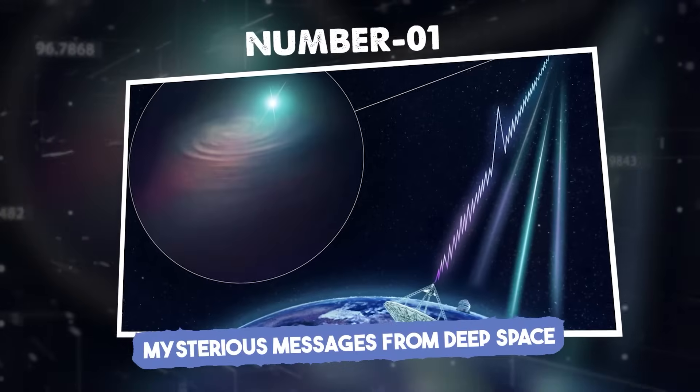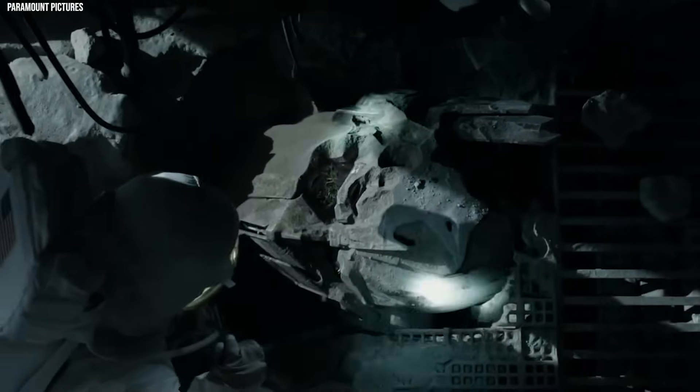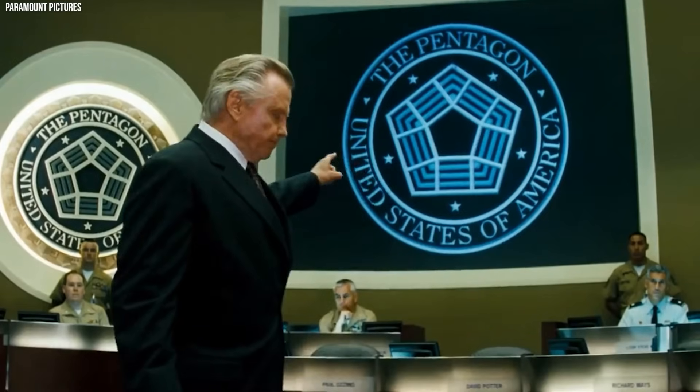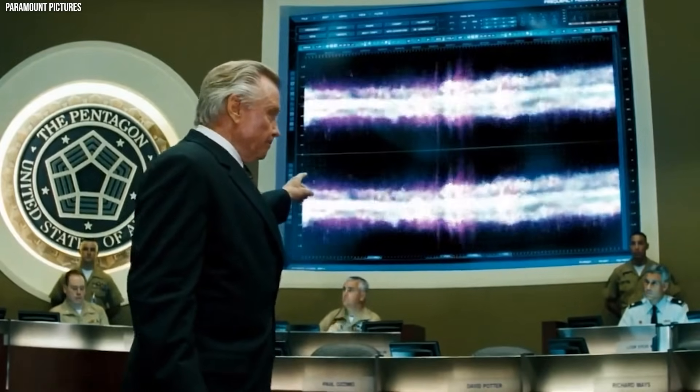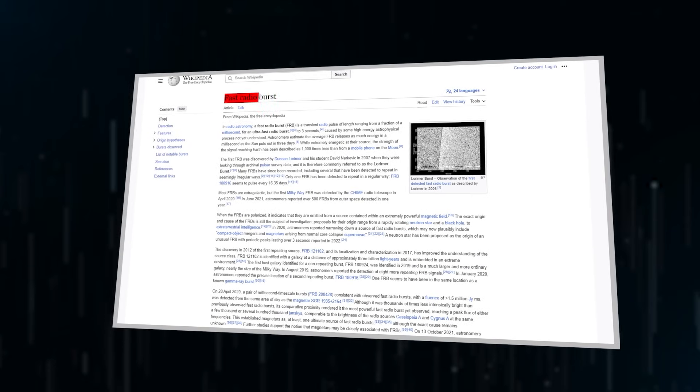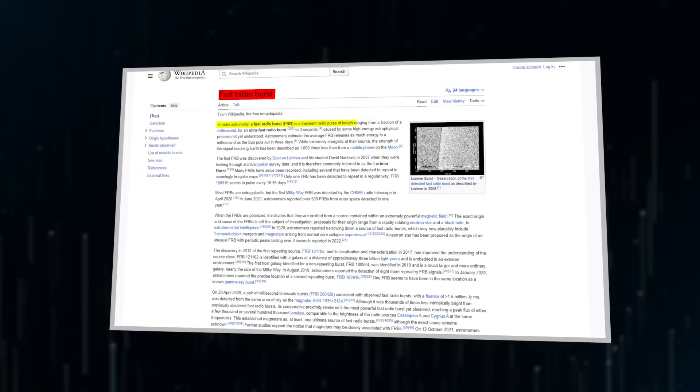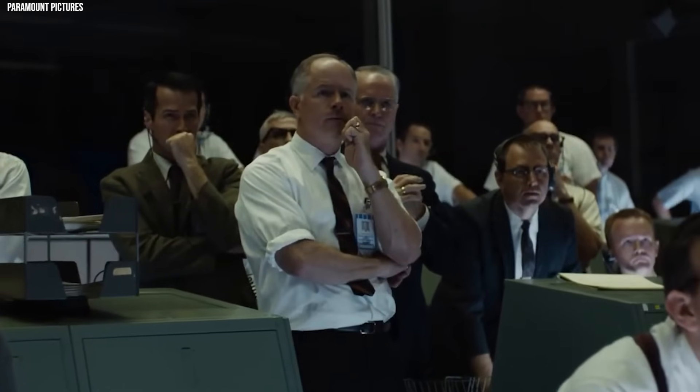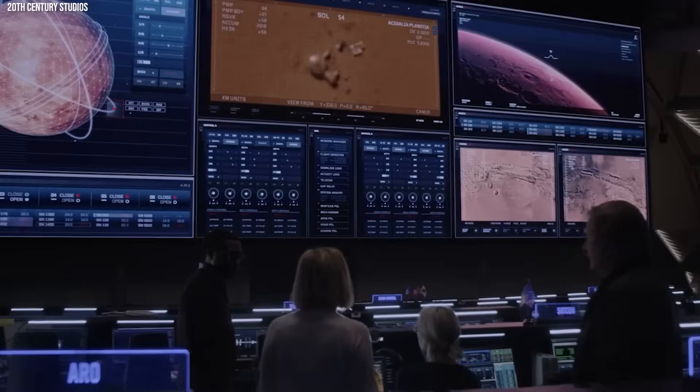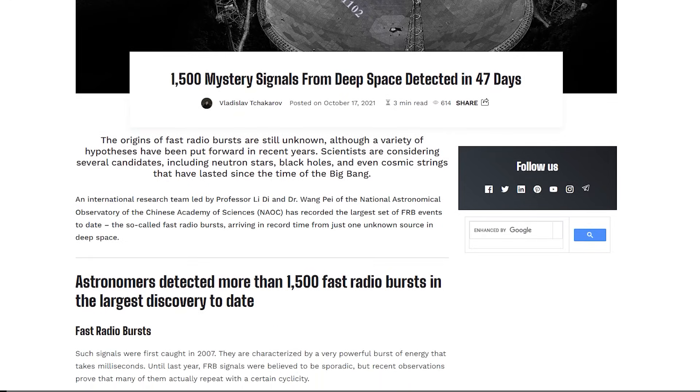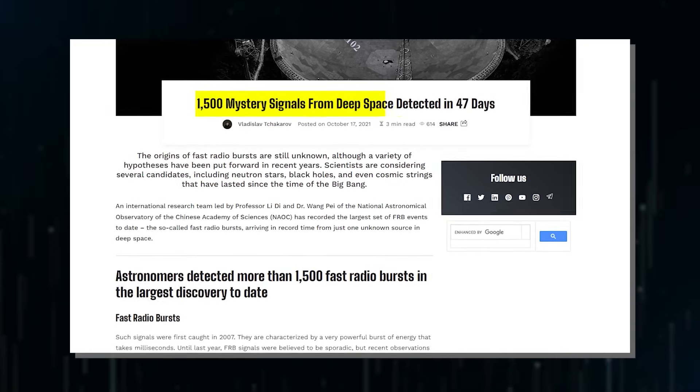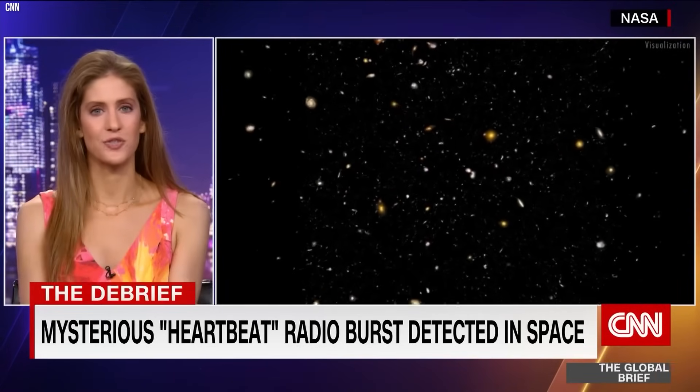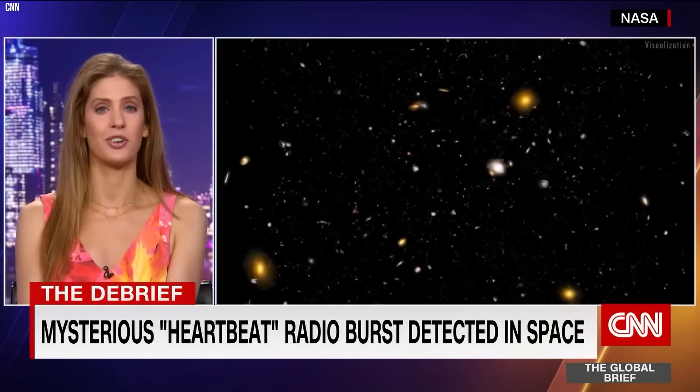Number one: mysterious messages from deep space. While this might sound like something out of a sci-fi movie, it's actually happening in real life as mysterious radio bursts are being detected from deep space at an unprecedented rate. These fast radio bursts, FRBs, are immensely powerful signals that flash for just milliseconds before vanishing without a trace. Their origins have scientists scratching their heads, but one source in particular is shattering records with over 1,500 bursts detected in just 47 days. Just like Jodie Foster's character in the movie Contact, scientists have come across a mysterious signal from a galaxy far, far away.